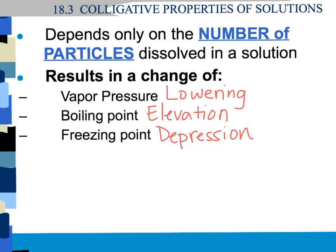Now we're going to go through each of these three different colligative properties and explain why vapor pressure gets lower, why the boiling point gets higher, and why the freezing point gets lower. We're first going to start with the vapor pressure.